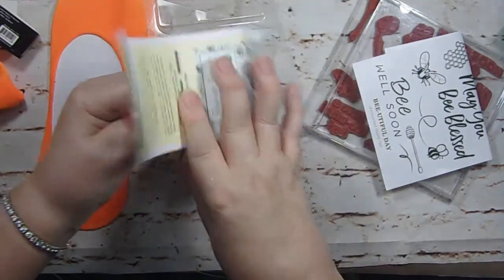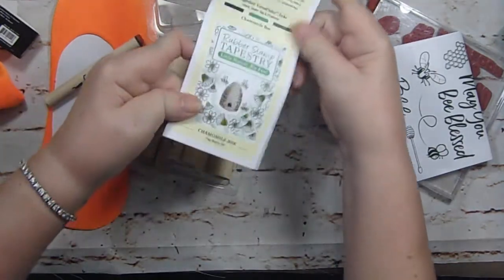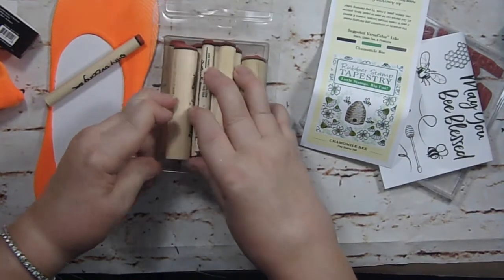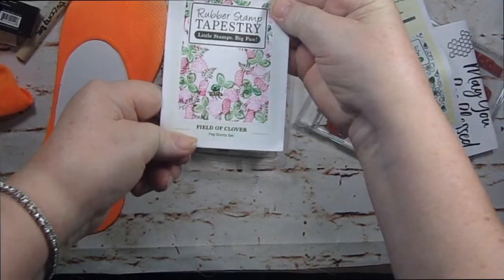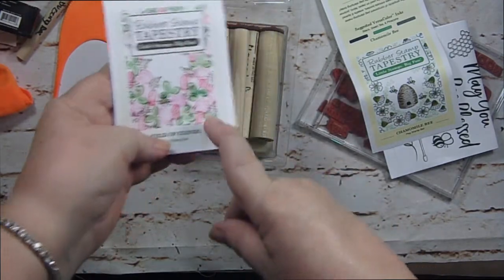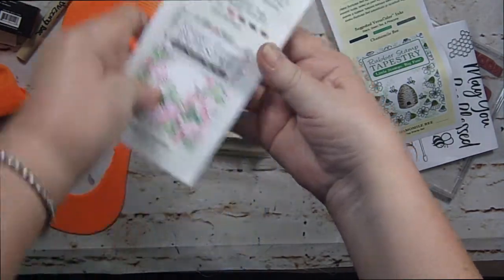Then in this set, it's called, I think this one's called Field of Clover. No, this is a bee set. I'm so inefficient today. Chamomile bee. Cute idea. And then the last one is Field of Clover. And this has really pretty clover in it. And then all the flowers you would get with clover as well as a fern.